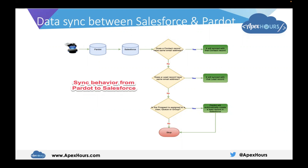If there is no existing lead record and no existing contact record, Pardot will create a new lead record in Salesforce. This was the first scenario we saw — right after creating the prospect in Pardot, it directly gets synced as a lead in CRM. This is how the entire Pardot data sync flow works. That was all about data sync between Salesforce and Pardot.